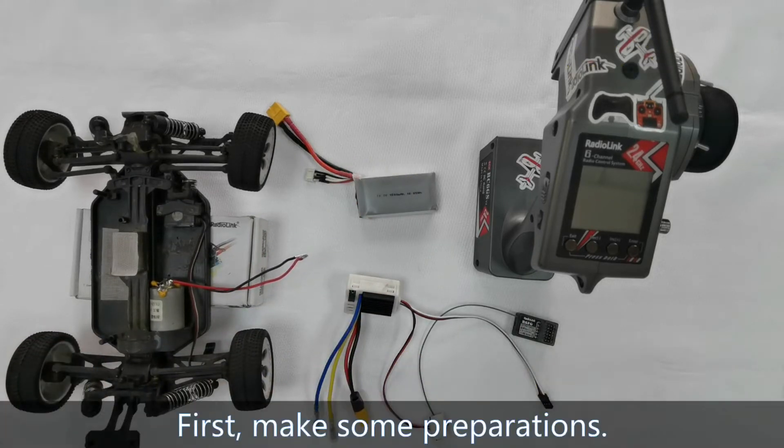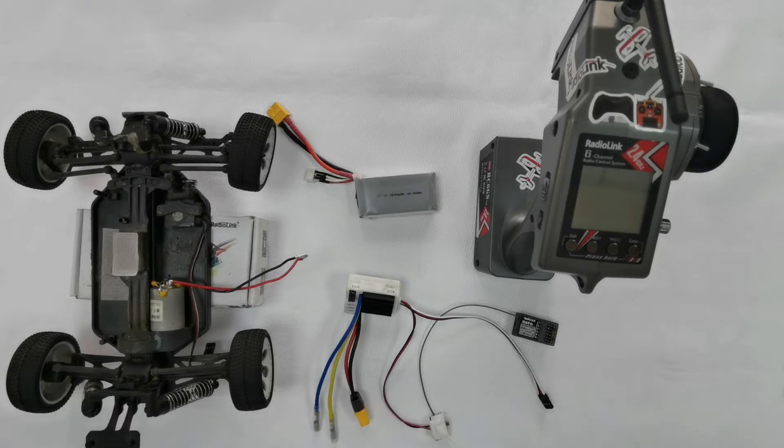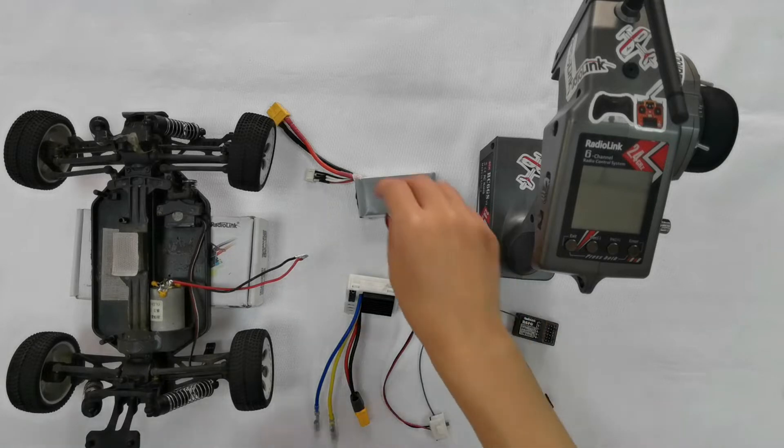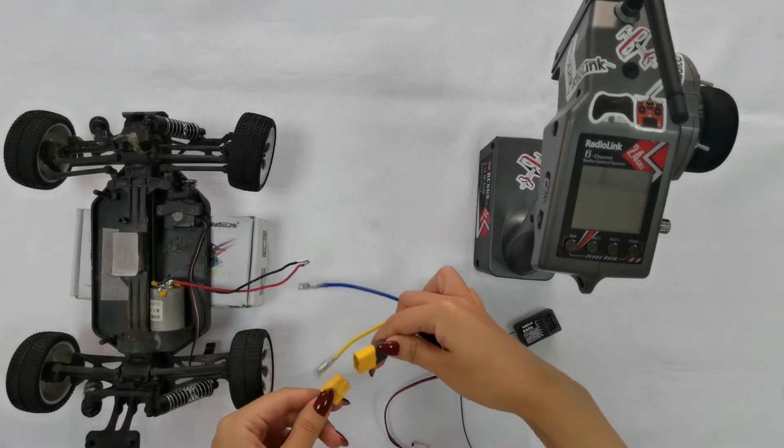First, make some preparations. Preparation 1: Connect the ESC, motor, battery, and receiver. Plug in the battery. Make sure the positive pole and negative pole is not reversed.